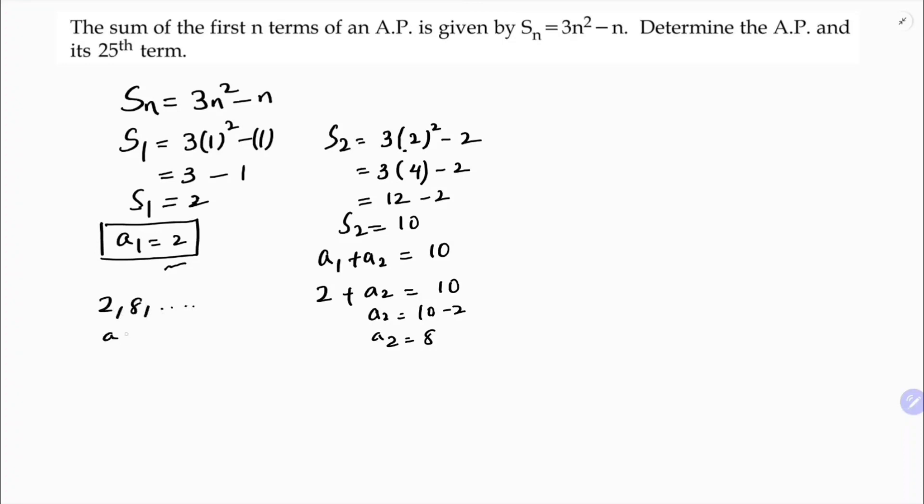Now you got the series 2 comma 8 and so on. So the first term is 2 and common difference will be a₂ minus a₁ which is 8 minus 2, which is 6. If you want you can calculate the third term.